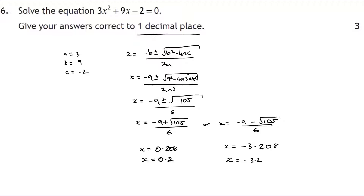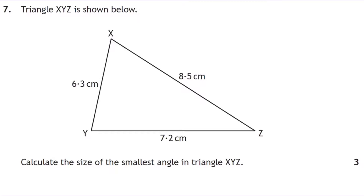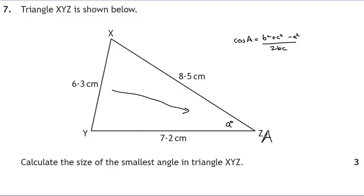Question seven: triangle XYZ with all three sides given. We want the smallest angle, which is opposite the smallest side. Using the cosine rule from the formula book: cos A = (b² + c² − a²) / (2bc). Angle A is the one we're finding, so a must be placed opposite that angle.